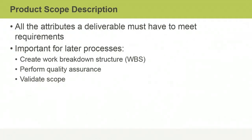The Product Scope description identifies all the attributes a deliverable must have to meet requirements. You use it as a baseline to create the work breakdown structure, which divides the work into more manageable work packages. You may also use it for later quality assurance activities, like quality testing and scope validation.